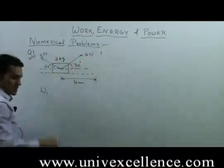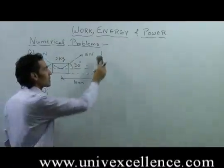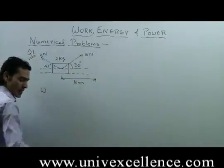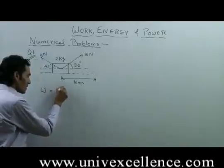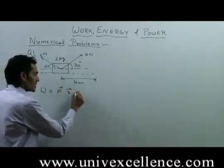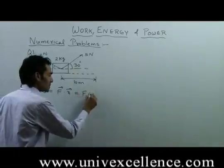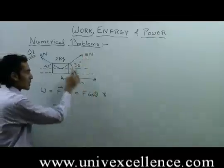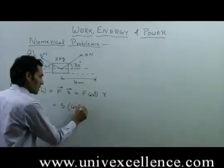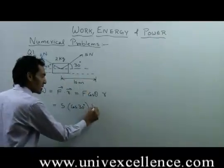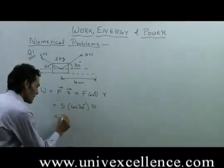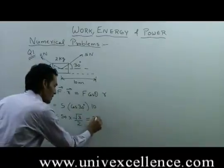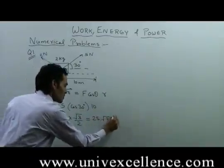Let's say this is the first force and this is the second force. We have to calculate the work done by the 5 N force. Work done by this force is F dot R, which is F cos θ into R. F is 5 N, cos 30 into R which is 10 meters. So, 50 into cos 30 — cos 30 is √3/2 — so we have 25√3 joules.